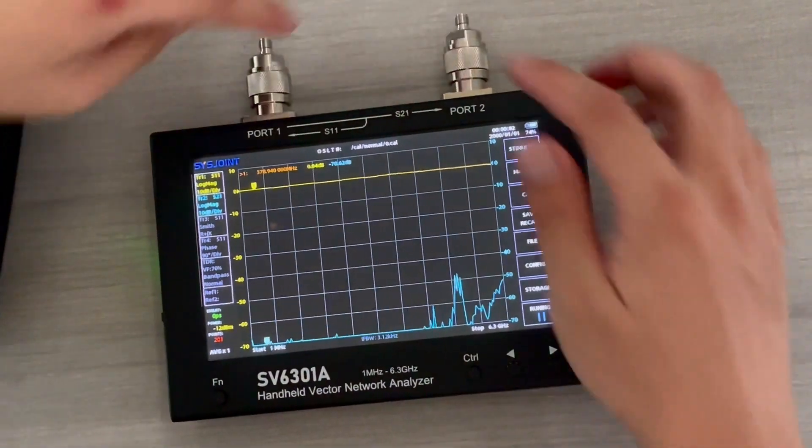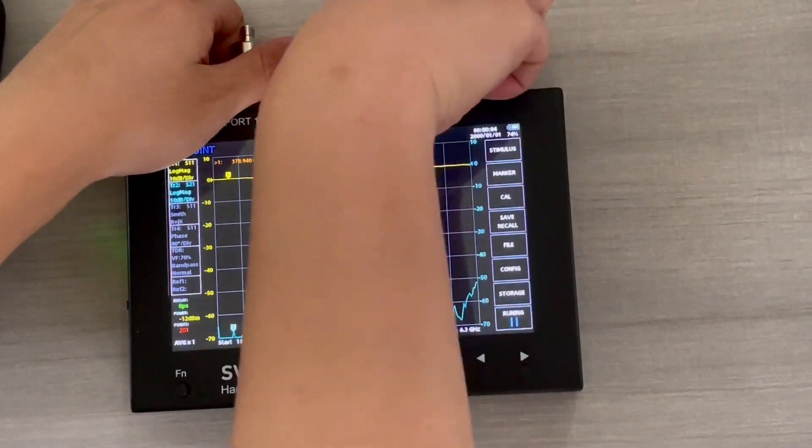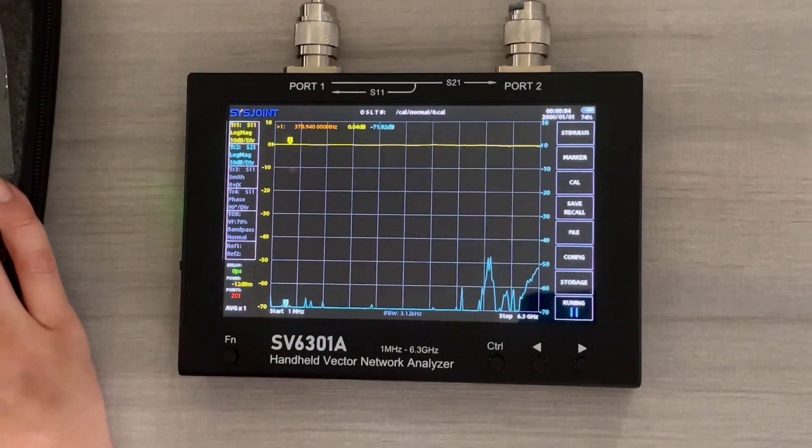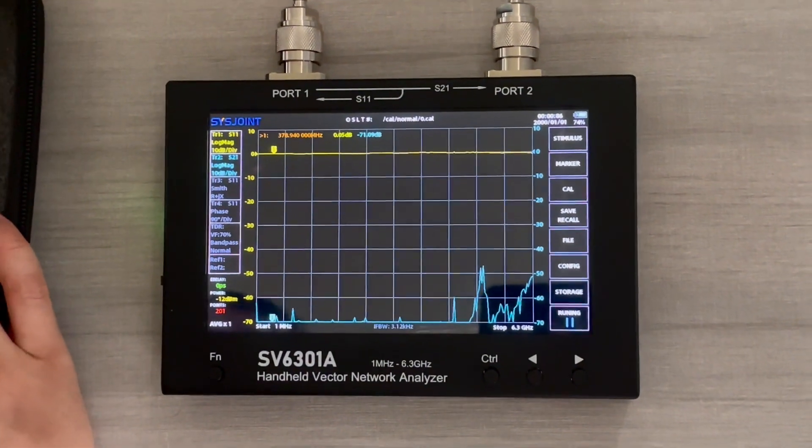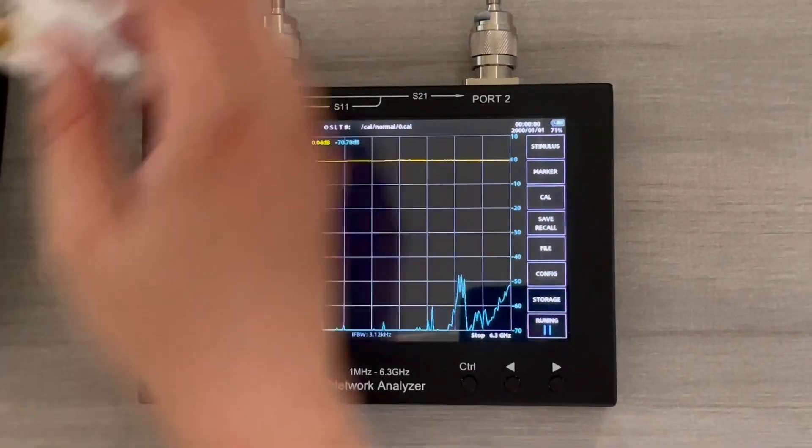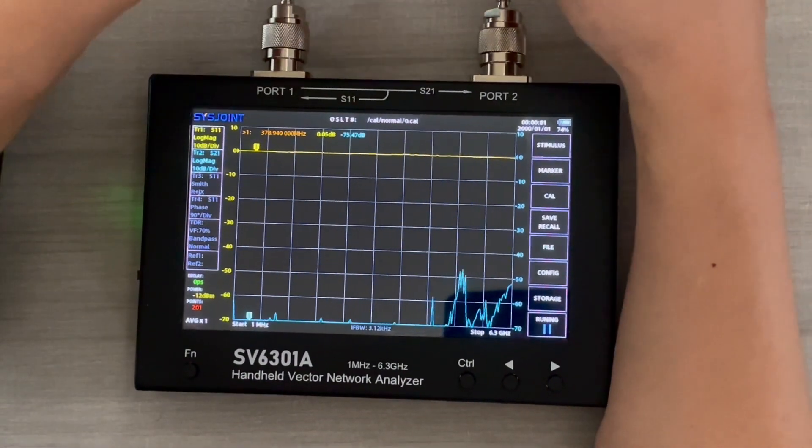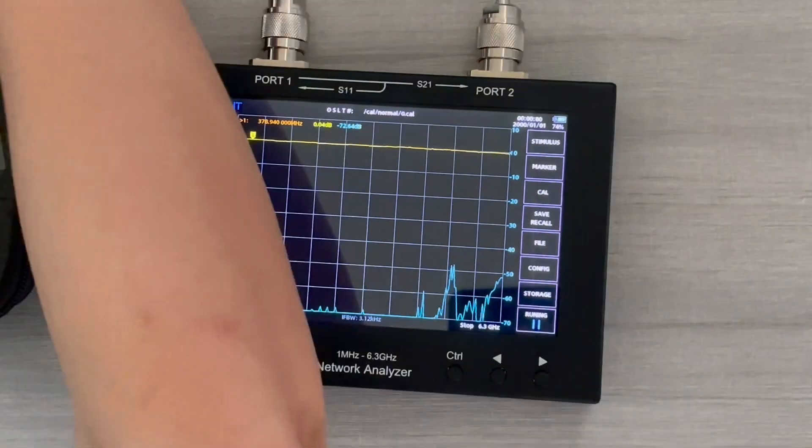You want to put the two adapters on it, port 1 and port 2. Like always, the first thing we want to do is calibrate our devices. We take out our calibration kit: the open, short, and load, and also the through cable.